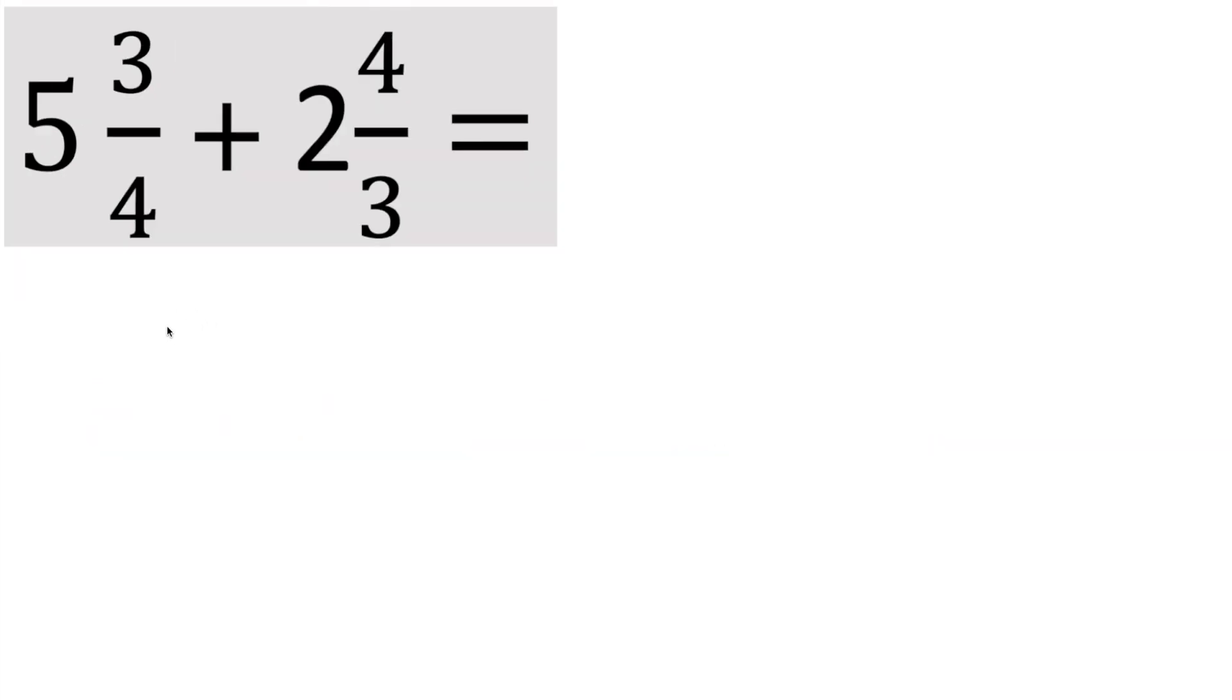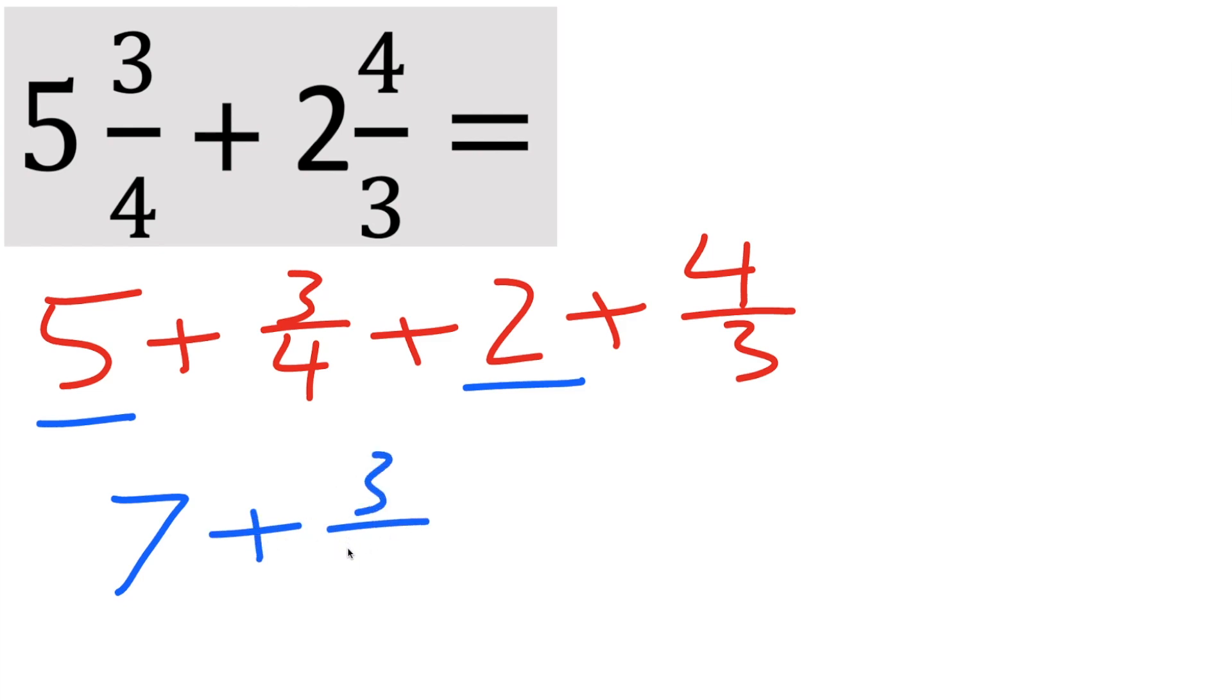Okay, our last problem. Same procedure. We have a whole number. We have a fraction. A whole number. A fraction. So we want to split it up first. So 5 plus 3 divided by 4 plus 2 plus 4 divided by 3. So we'll combine all of the whole numbers. So 5 plus 2 is 7, plus 3 divided by 4, plus 4 divided by 3.